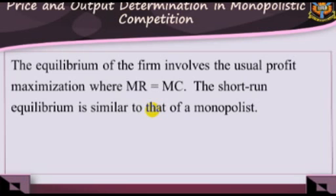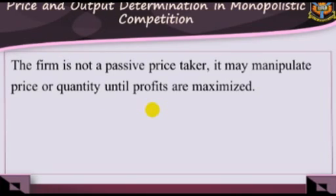Price and output determination in monopolistic competition. The equilibrium of the firm involves the usual profit maximization where marginal revenue equals marginal cost. The short-run equilibrium is similar to that of a monopolist. The firm is not a passive price taker — it may manipulate price or quantity until profits are maximized.